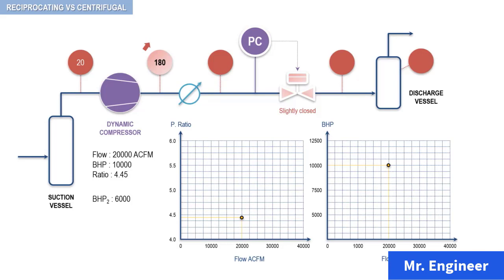In order to see this on the graph, we need first to calculate the new pressure ratio. Recall, the pressure ratio is equal to the discharge pressure divided by the suction pressure, and both pressures must be expressed in absolute pressure. So here, the ratio after doing the calculation will be equal to 5.6. Now, plotting the higher pressure ratio and brake horsepower points on the graph will yield a higher pressure ratio and a lower flow point, as depicted here.